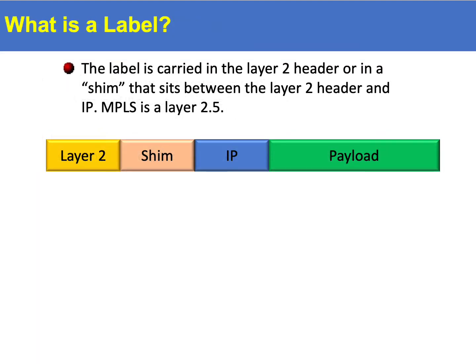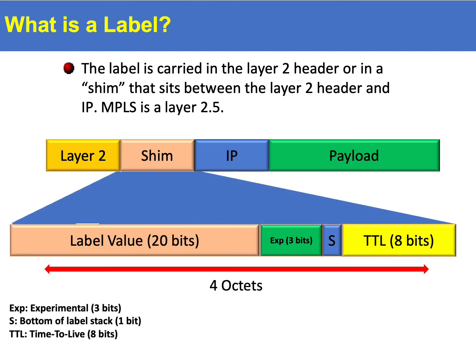MPLS is a layer 2.5 protocol. It sits between the MAC layer and the IP layer. It is a very useful protocol allowing carriers to establish virtual private networks across large public networks. This technology can also be found deployed in large enterprise networks.